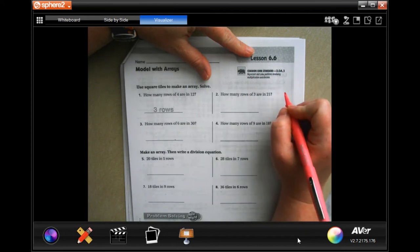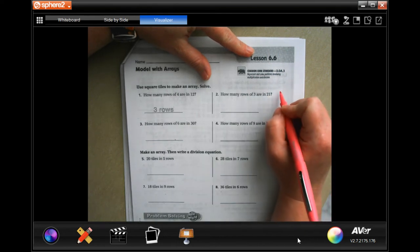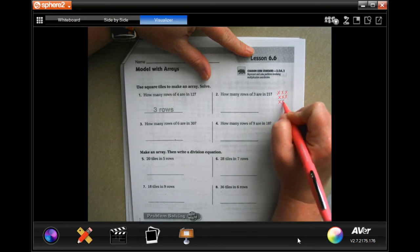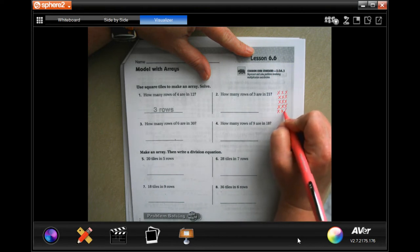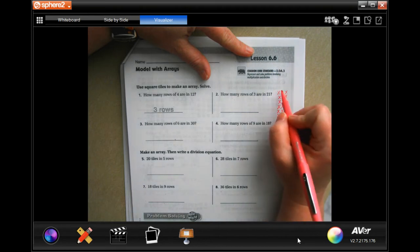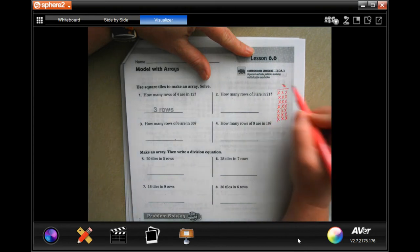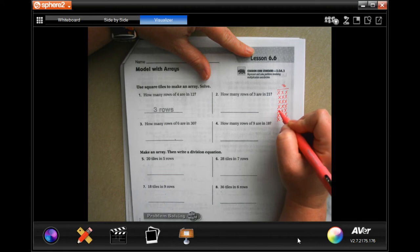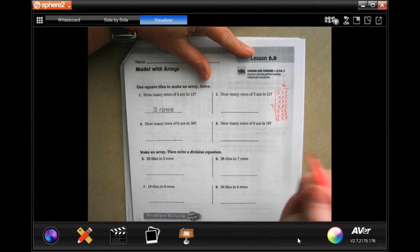I'm gonna do rows of three until I make it to 21. So one, two, three, four, five, six, seven, eight, nine, ten, eleven, twelve, thirteen, fourteen, fifteen, sixteen, seventeen, eighteen, nineteen, twenty, twenty-one. So now I have rows of three. I have one, two, three, four, five, six, seven of those rows. So I have seven rows.